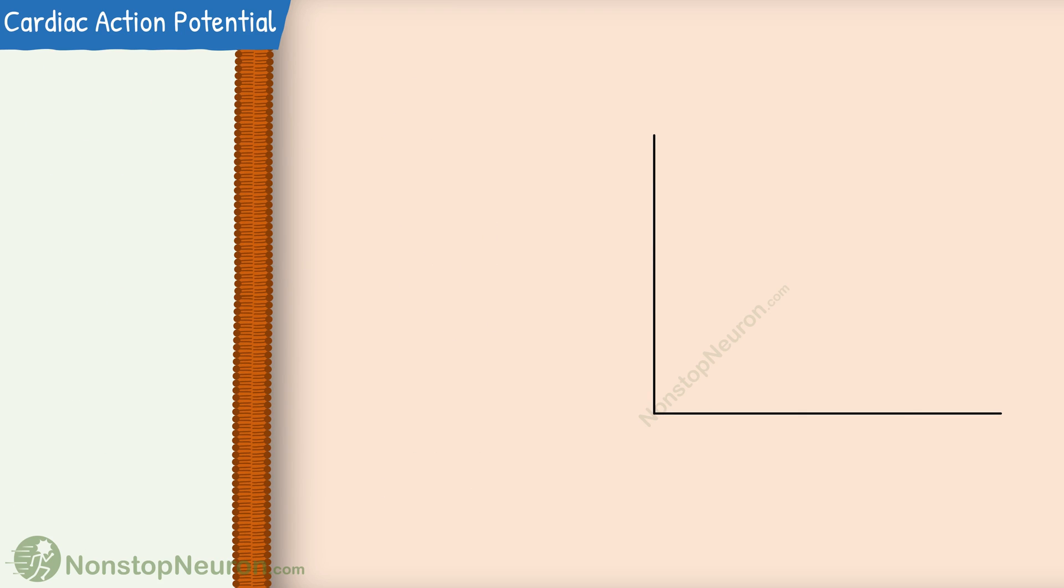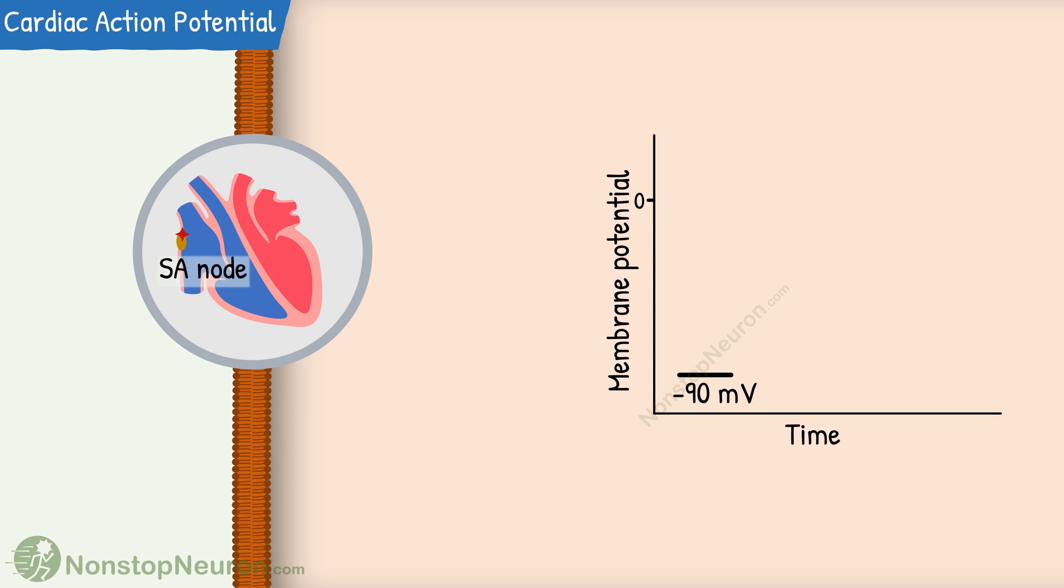Now this graph is showing membrane potential versus time. Resting membrane potential in ventricular muscle is about minus 90 mV. We know that at the heart, impulses are generated at the SA node. As the impulse reaches this point, the action potential will appear here.